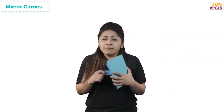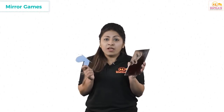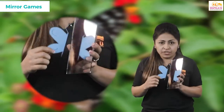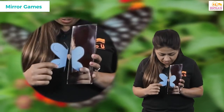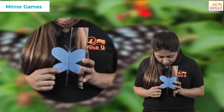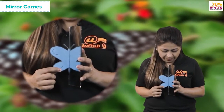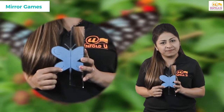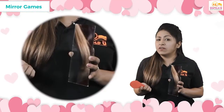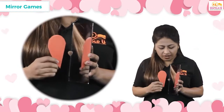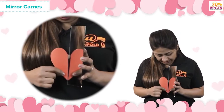Let us now play some mirror games. Look at this butterfly — but this is half a butterfly. When I get this near to the mirror, you see that now this is a complete butterfly. Similarly, this half heart is now a complete heart.